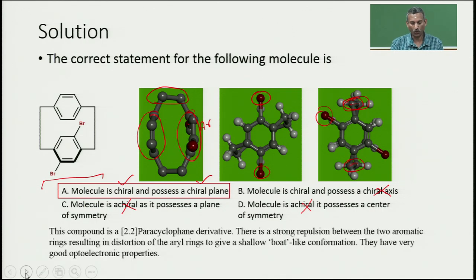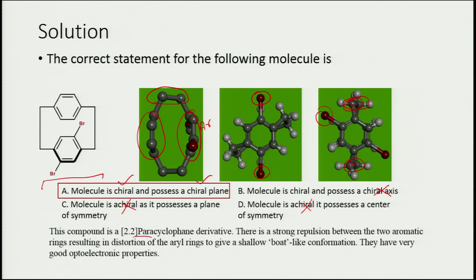These compounds are called [2.2]paracyclophane derivatives. There is strong repulsion between the two aromatic rings, resulting in distortion of the aryl rings to give a shallow boat-like conformation. This distortion is responsible for the excellent optoelectronic properties of these cyclophane derivatives, making them important in many optoelectronic devices.